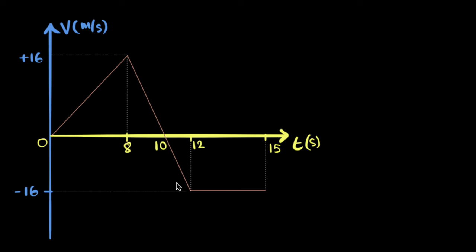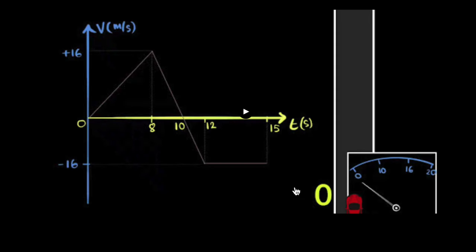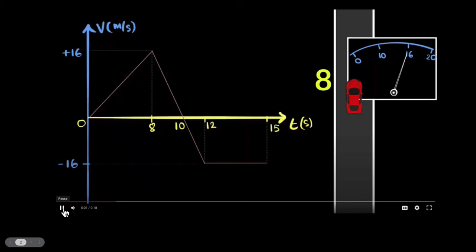That's basically the story of this graph. If you could visualize it, let me show you the animation. So here we have the car, the timer, and the speedometer. Let's look at it from zero to eight seconds — you can see that the car kept on increasing its speed.